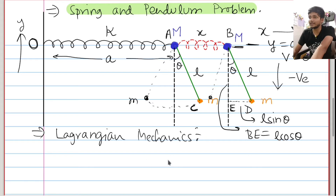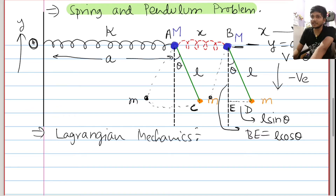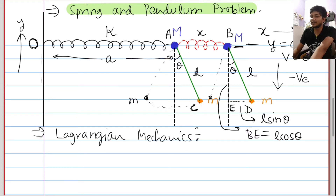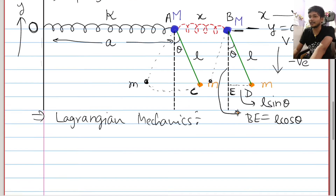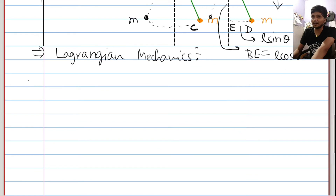अब आपको एक और चीज़ ध्यान में देनी होगी — जब भी आप कोई भी position measure करोगे, वह आप इस origin O से measure करोगे, या इसकी axis के respect में। अगर आपको किसी भी particle की — small m या capital M की — position measure करनी है तो। तो पहला काम यह है कि हमें Lagrangian निकालनी है।